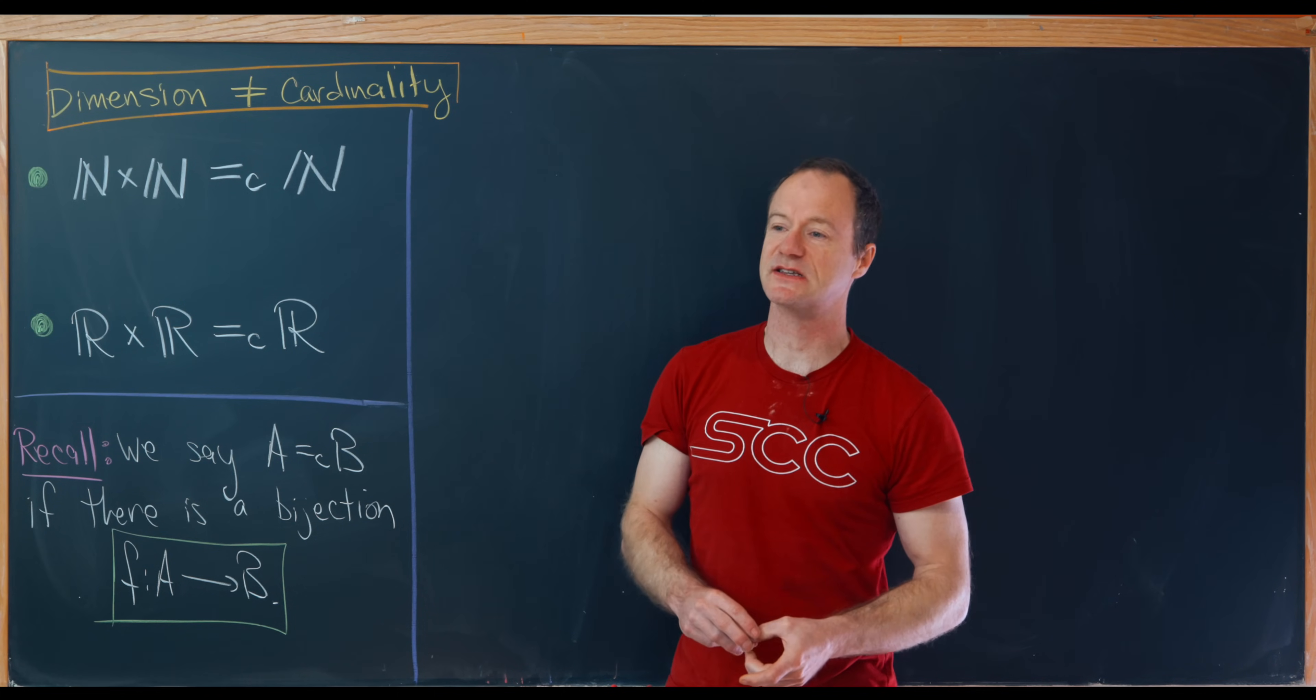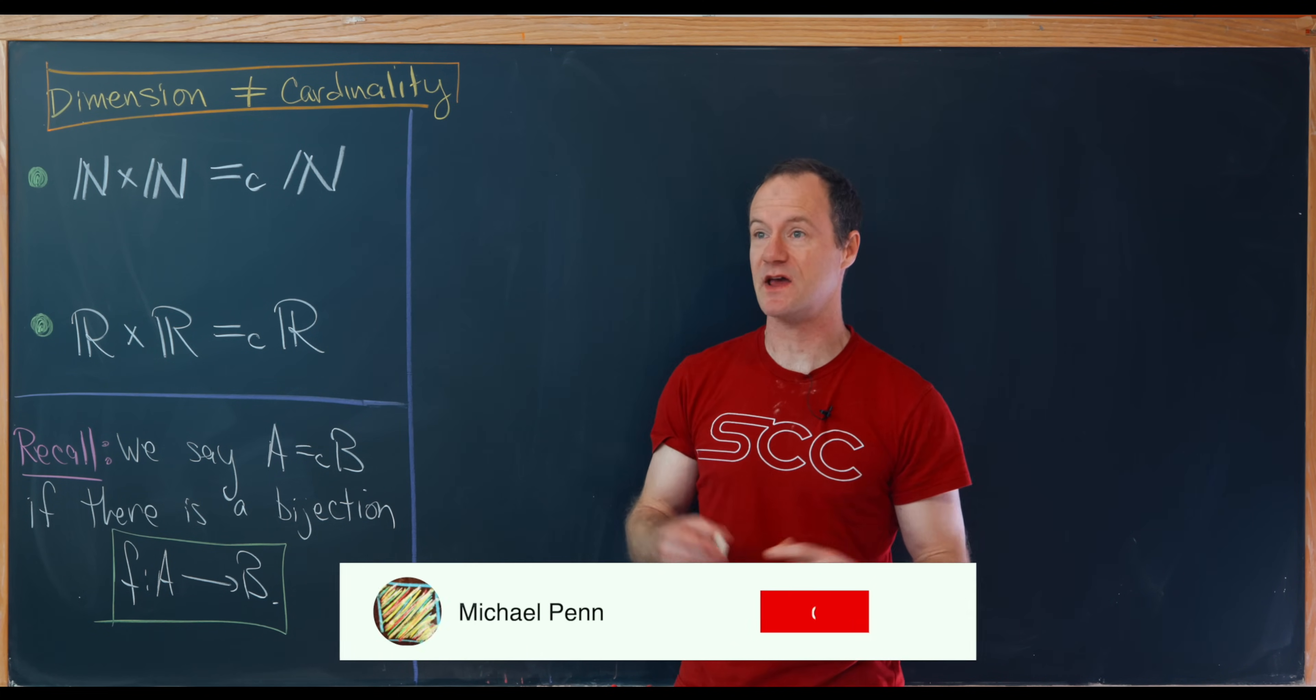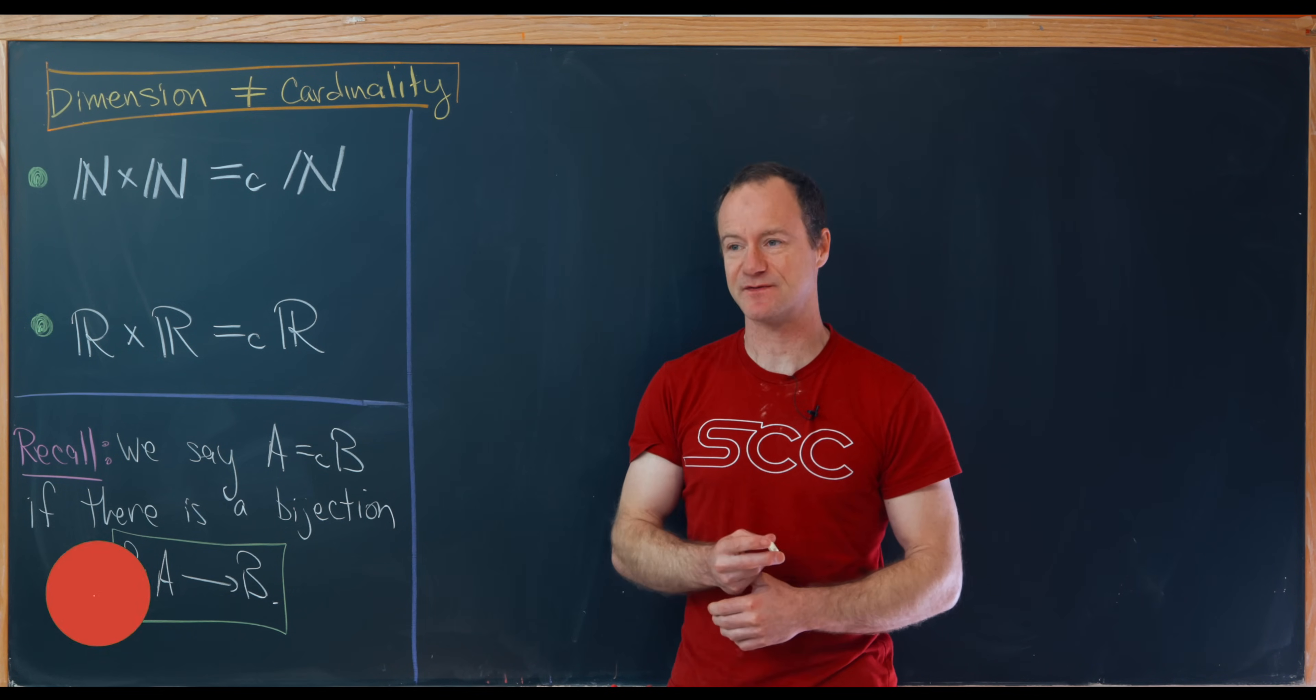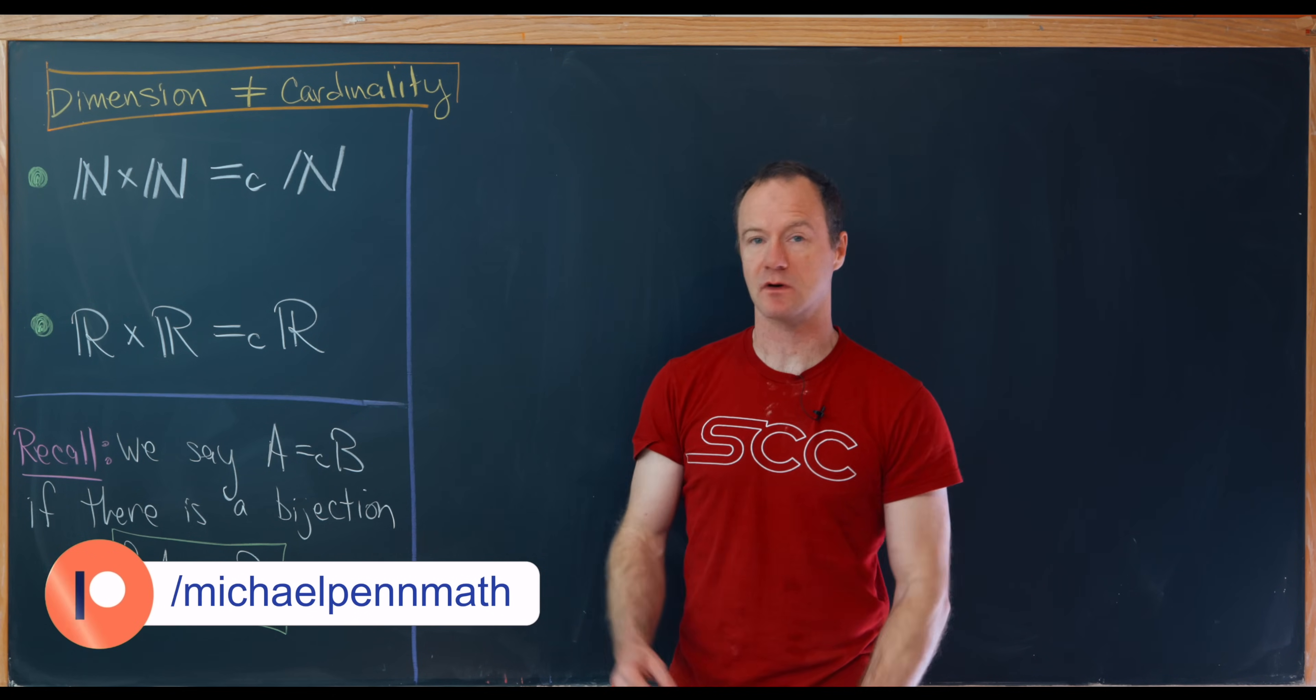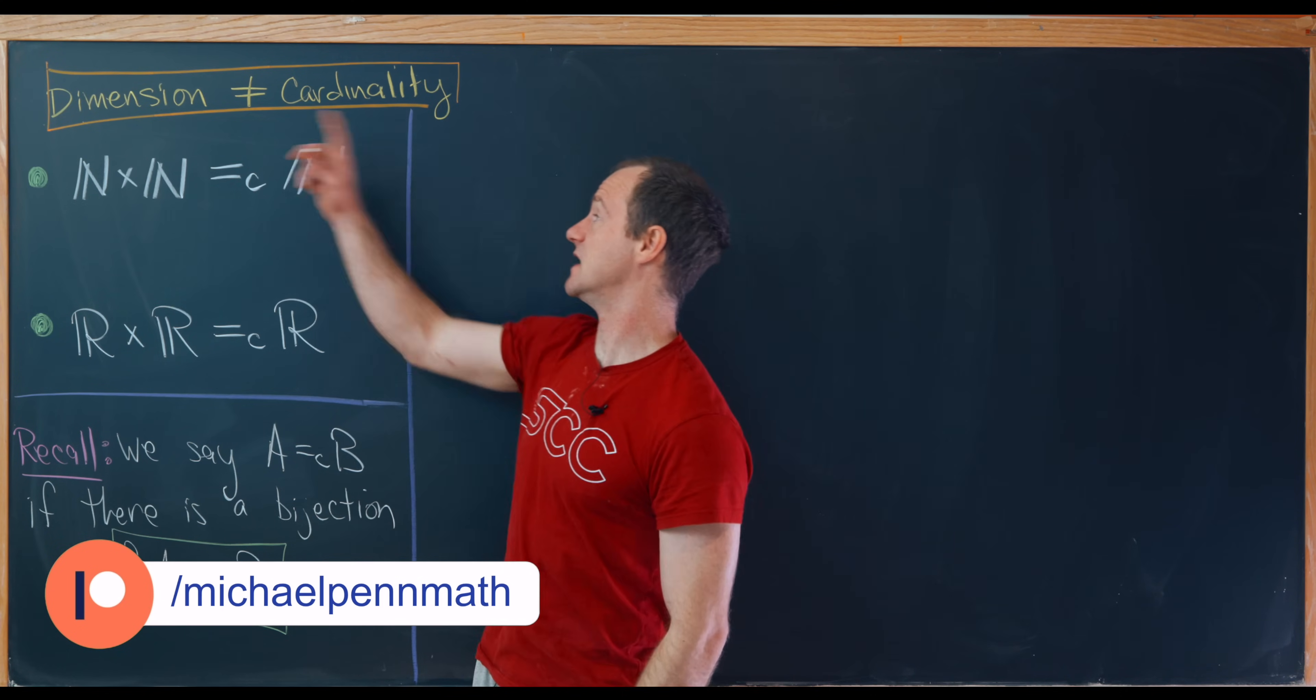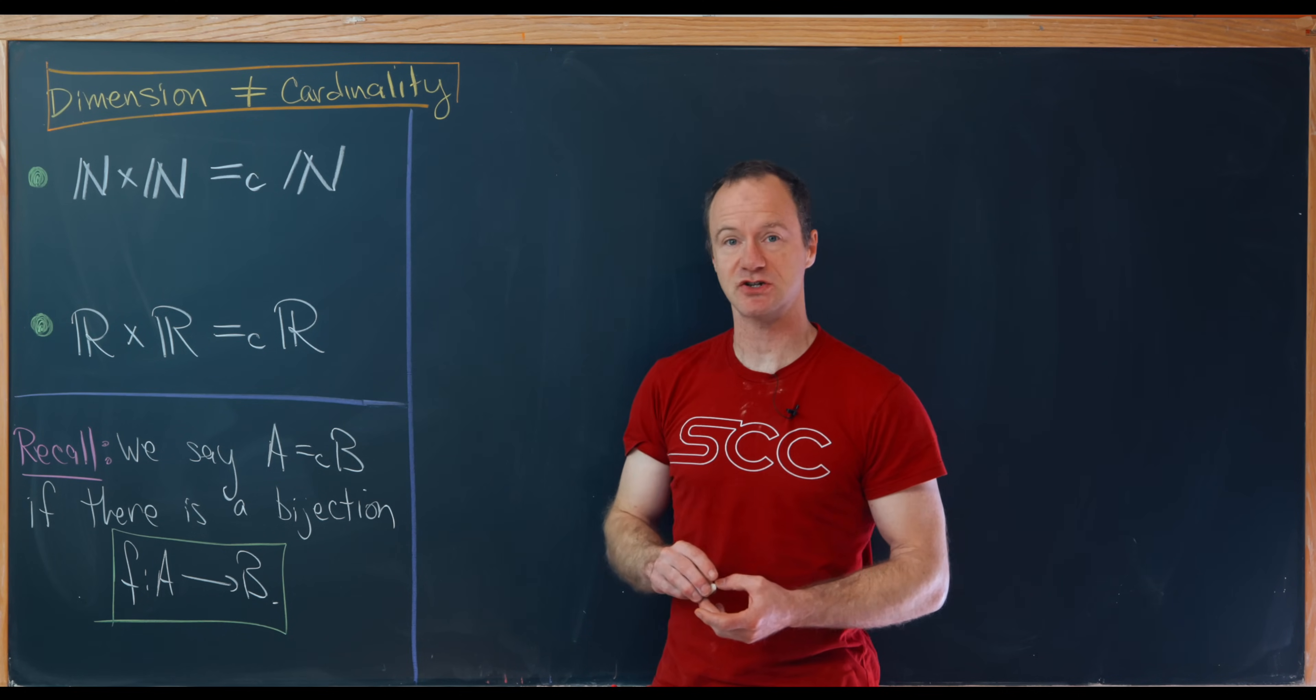Today we're going to look at two interesting examples that give some motivation for why the dimension is not really a good measurement of the size of a set. And by the size of a set I mean the number of elements in a set. So maybe we'll just briefly say dimension does not equal cardinality, although that's clearly an oversimplification.